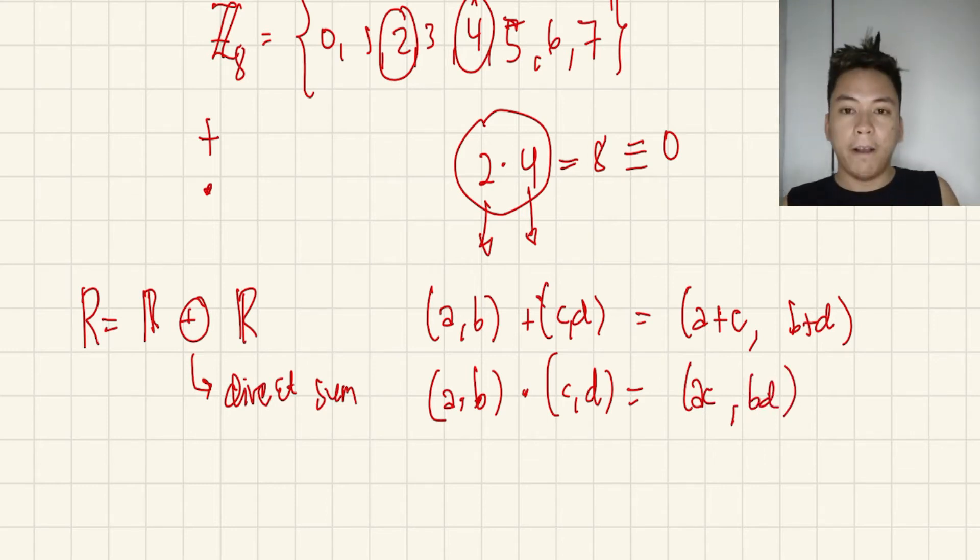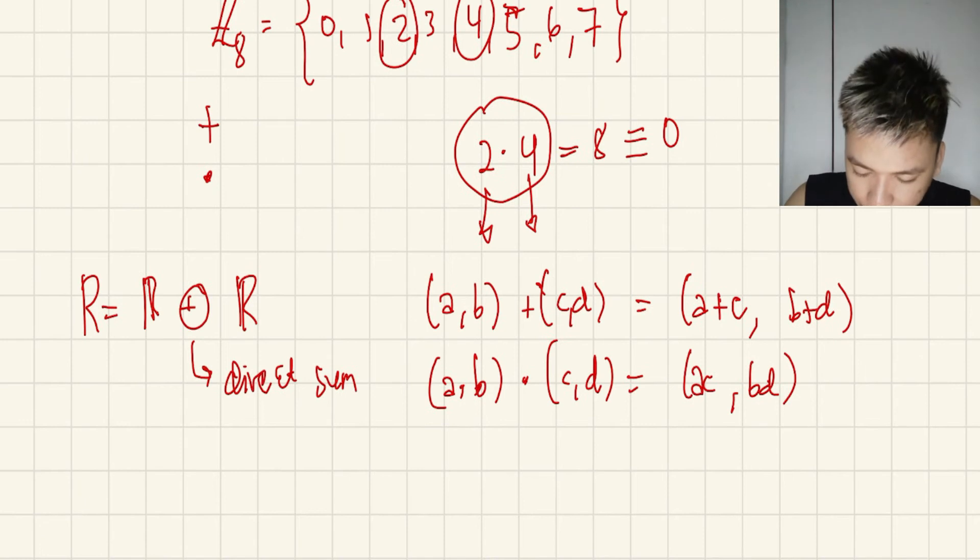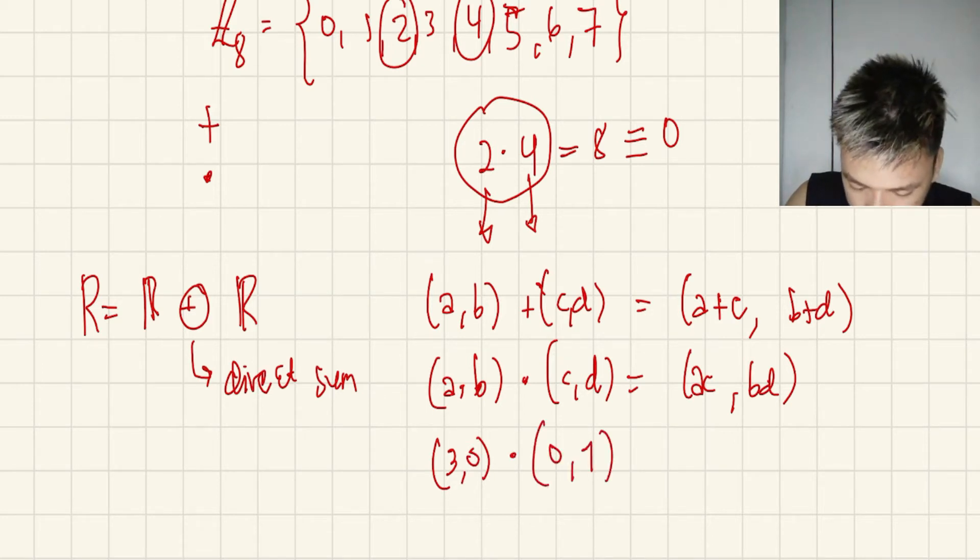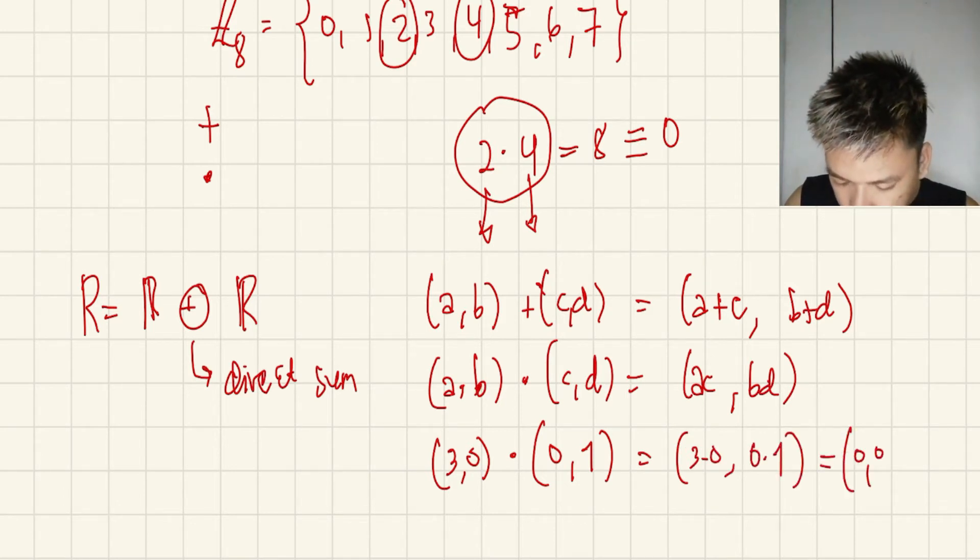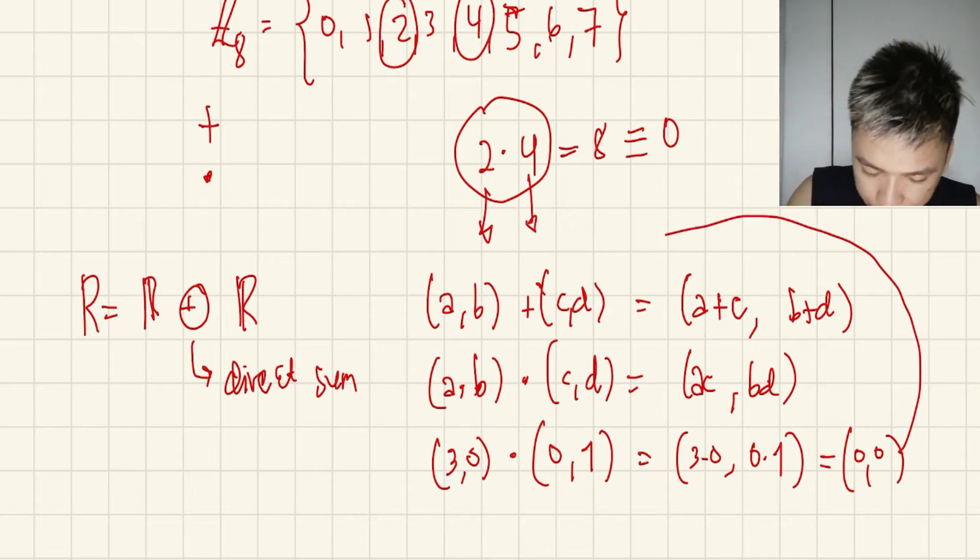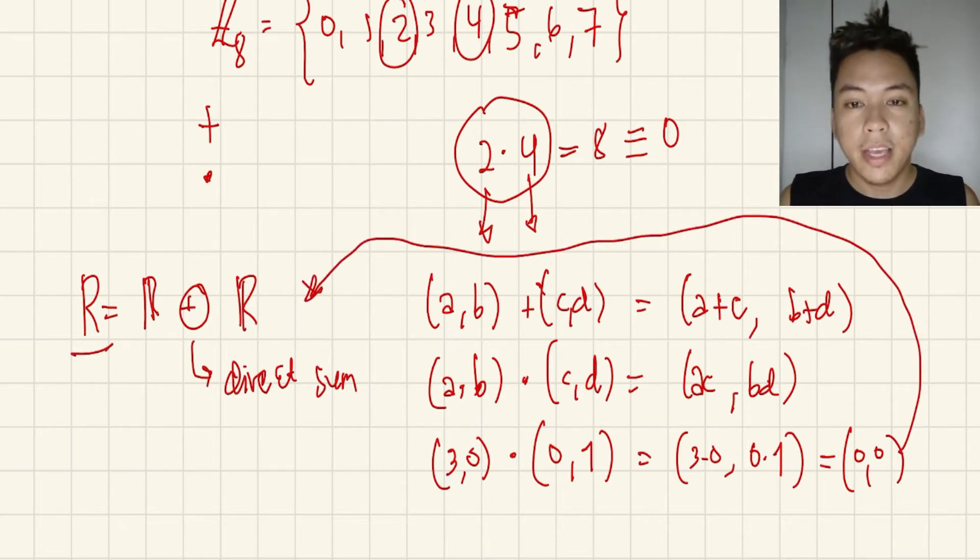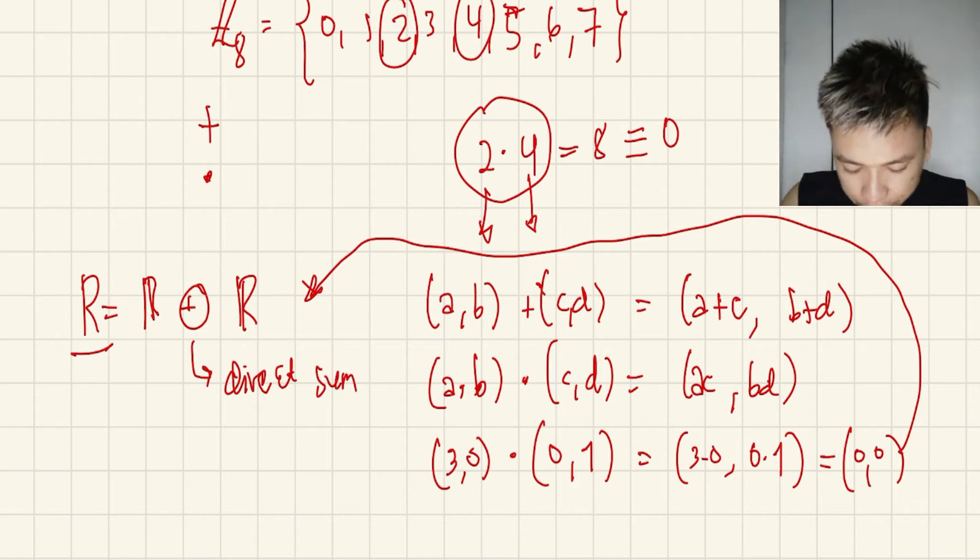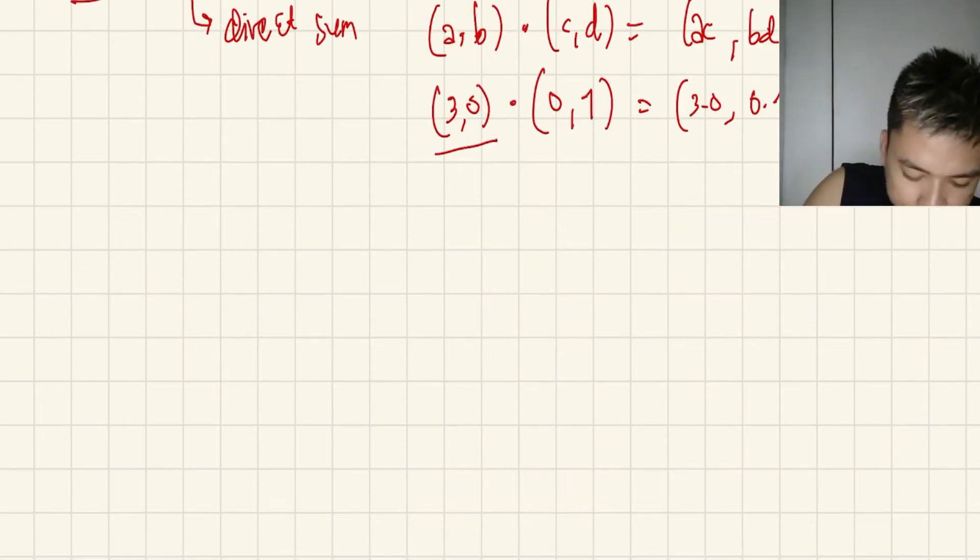So observe that for a specific element, let's say I have (3,0) multiplied by (0,1), you get 3 times 0, 0 times 1, and that's exactly (0,0). This (0,0) here is our additive identity of this R. Then this means that (3,0) and (0,1) are zero divisors.